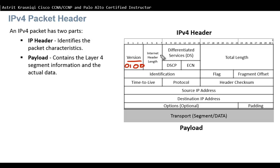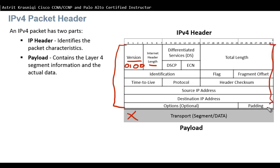The next field is Internet Header Length. Internet Header Length explains how big the header is, without the payload information — just the IPv4 header itself.